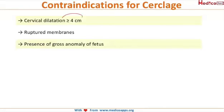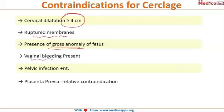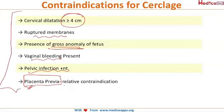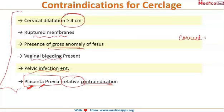Contraindications for cerclage include cervical dilatation of 4 cm or more, ruptured membranes, presence of gross fetal anomalies, vaginal bleeding, pelvic infections, or placenta previa. Placenta previa is a relative (not absolute) contraindication, as attempting cerclage in such cases may injure the placenta and cause torrential bleeding. If the correct diagnosis has been made — that mid-trimester abortions are due to cervical incompetence — the success rate of these surgeries is 85 to 90 percent, meaning the pregnancy can be carried to term.